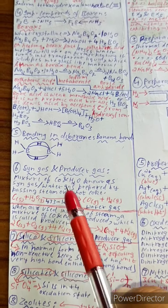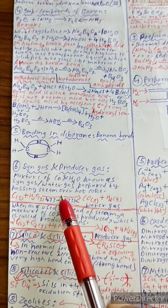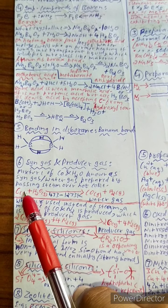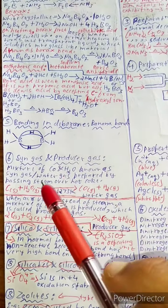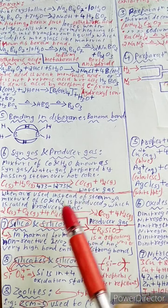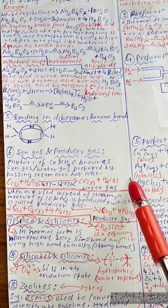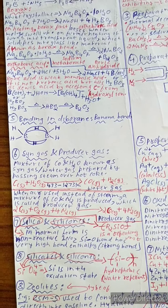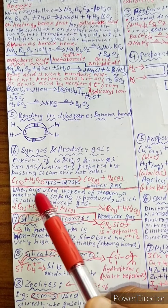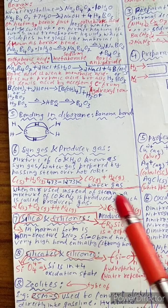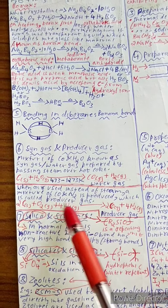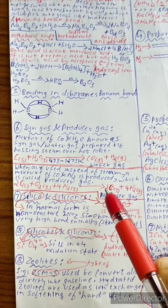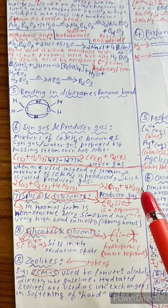Syngas: a mixture of carbon monoxide and hydrogen is known as syngas or water gas, prepared by passing steam over hot coke. Reaction: C(s) + H₂O(g) → CO(g) + H₂(g). When air is used instead of steam, a mixture of CO and N₂ is produced called producer gas. Reaction: C(s) + O₂(g) + 4N₂(g) → 2CO + 4N₂.